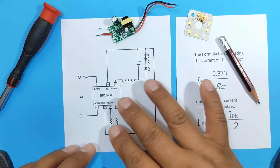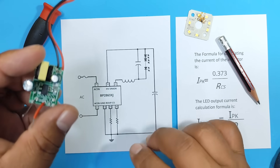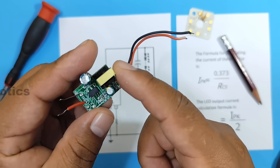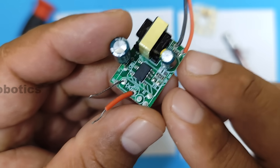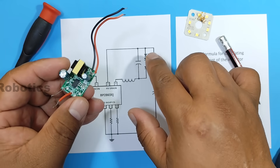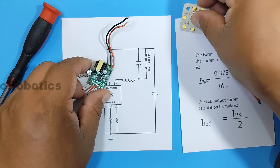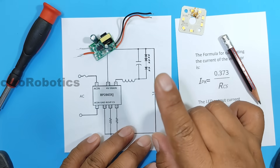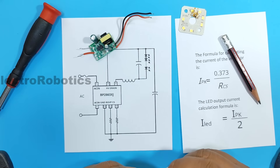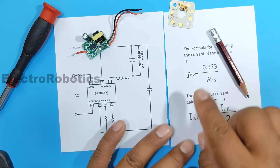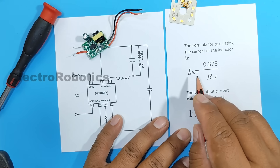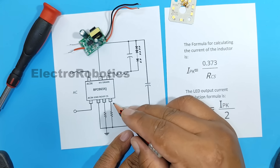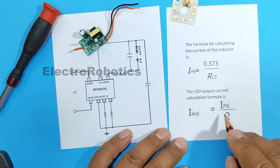A little theory. Here we have the circuit of the electronic board, in which we can see that we have two capacitors — and these would be those capacitors. We also have a coil, and we have a resistor, which is what we need to modify. We also have the LED strip, which would be this one here. Now we need to modify the current that reaches the LED strip — that is, we're going to lower the current to a value suitable for our wall clock. The peak current is equal to 0.373 divided by the resistance on pin 4. After that, we can calculate the current to the LEDs, which would be half the peak current.